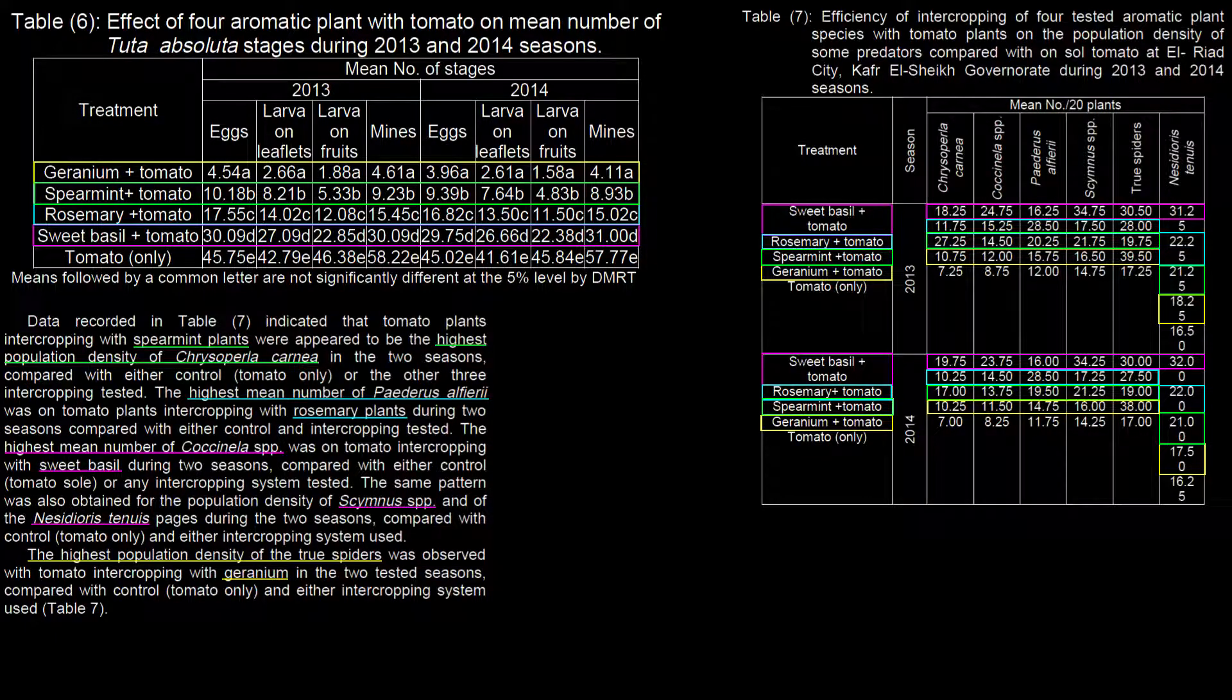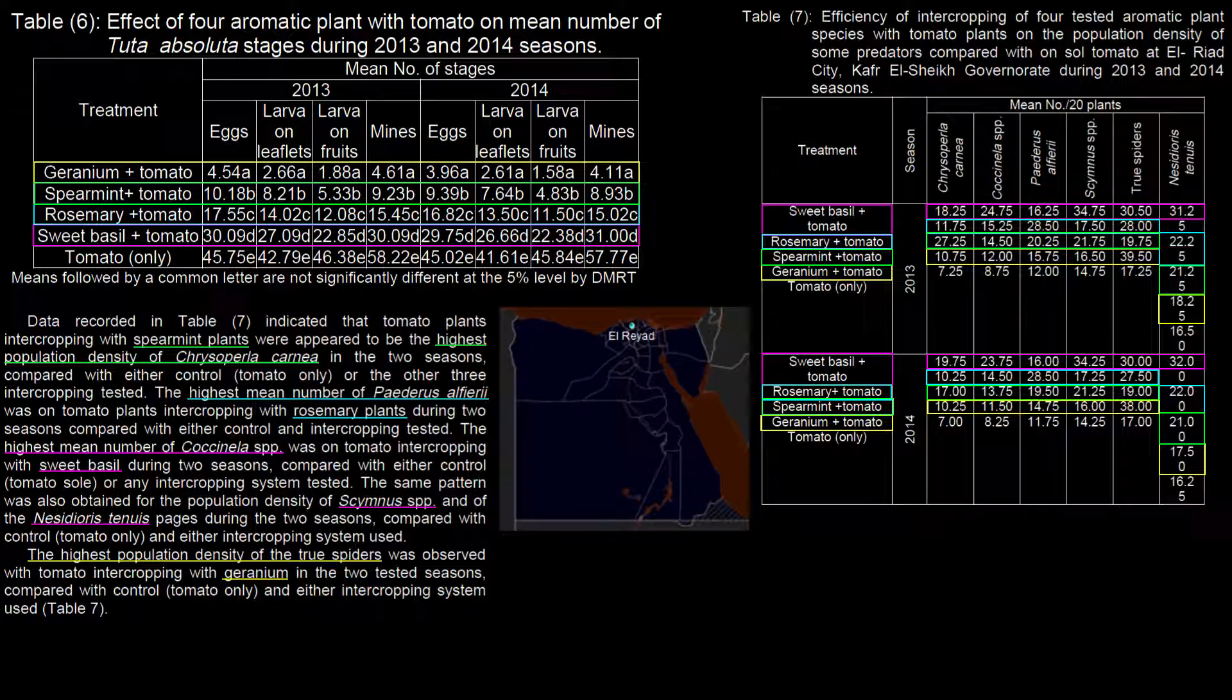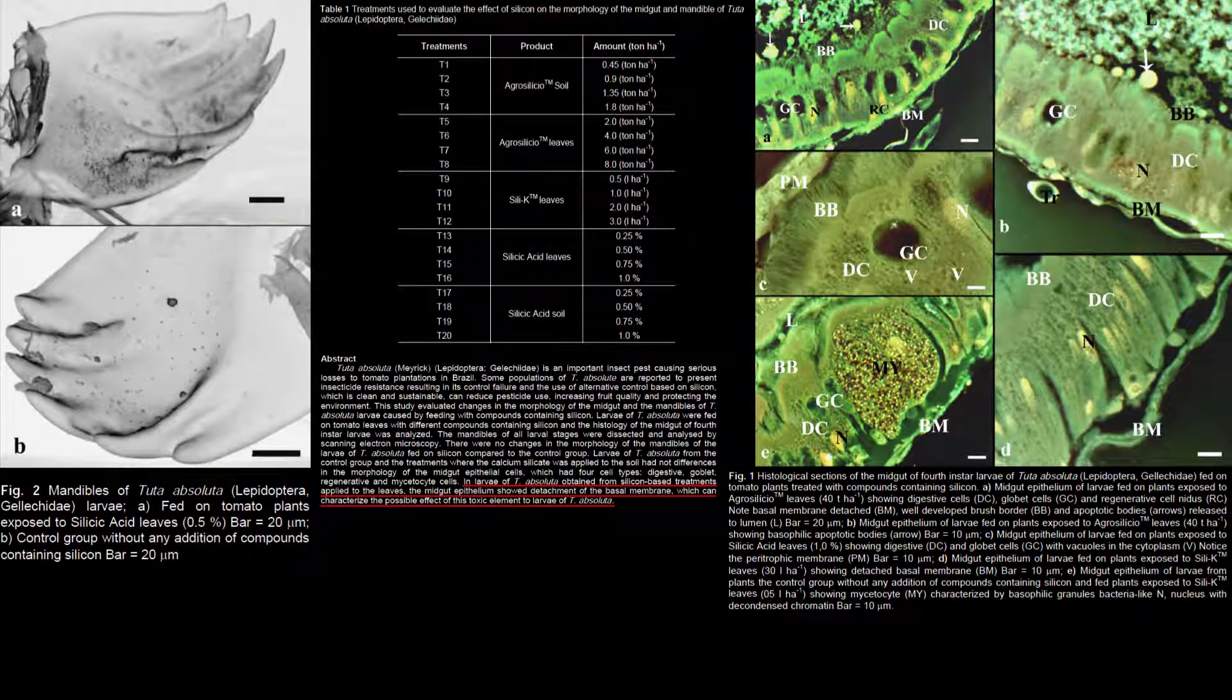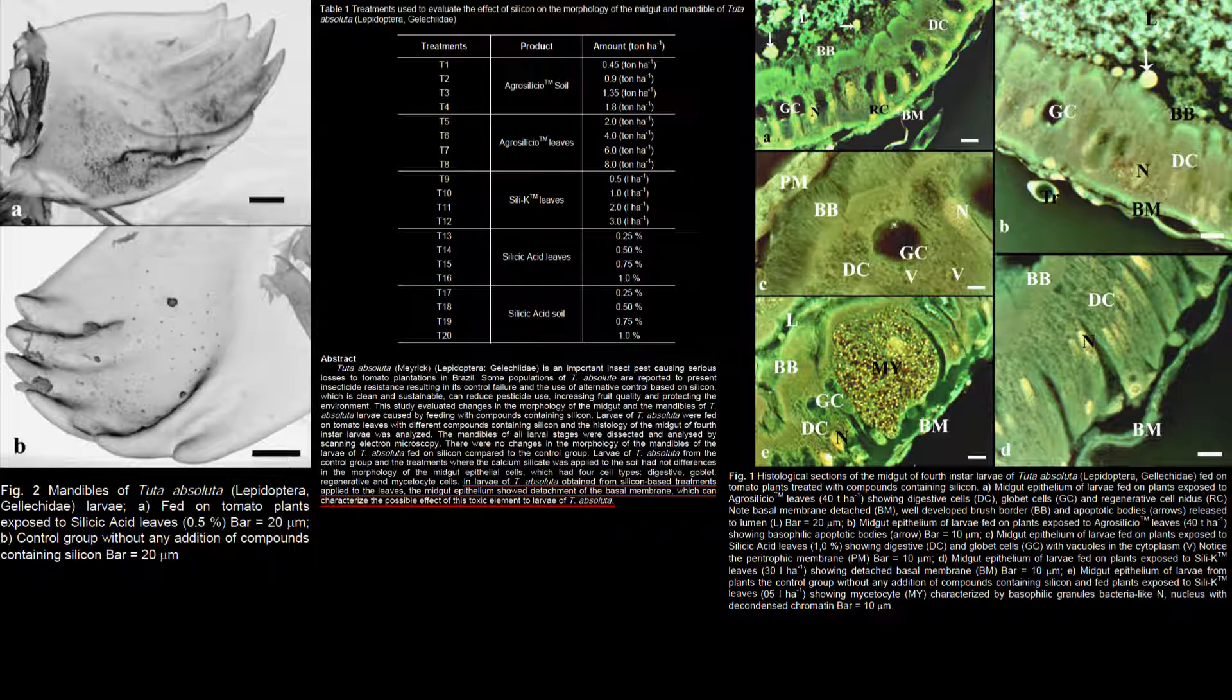Additionally, Kefagy found that intercropping tomatoes with spearmint, rosemary, geranium, and sweet basil increased biocontrol attraction of green lacewing, Pedaris alpheii, true spider, and Coccinella species respectively in the El Raid region of the Kafr El Sheikh governorate of Egypt. Silicon foliar treatments under laboratory conditions have also been shown to have a toxic effect on larval Tuta absoluta, affecting the cohesion of their gut, ultimately killing them.